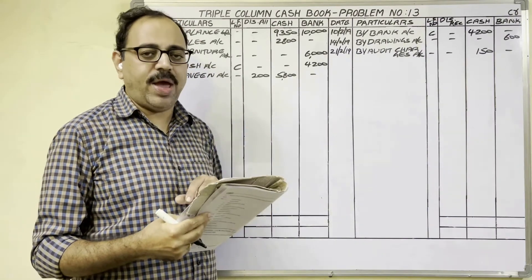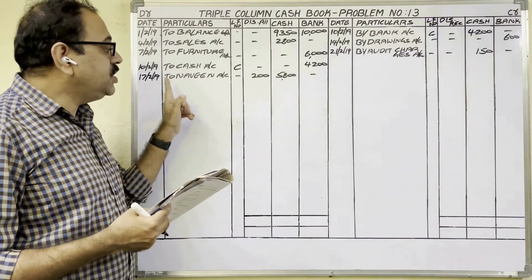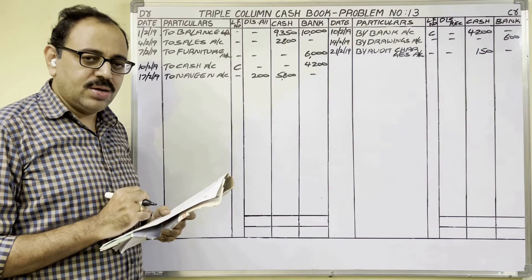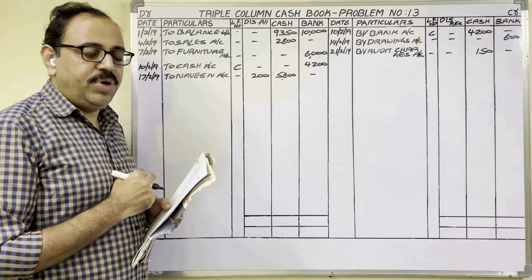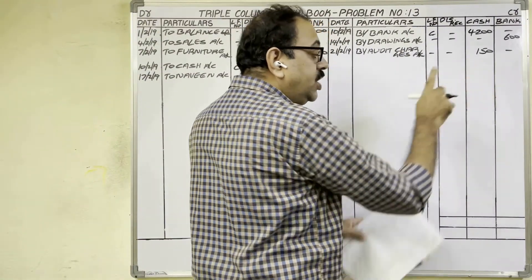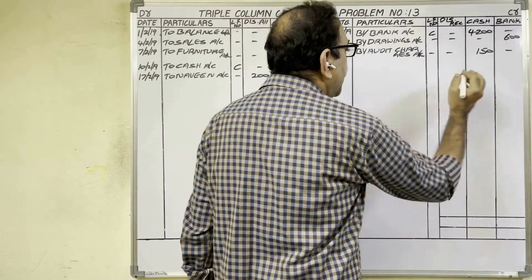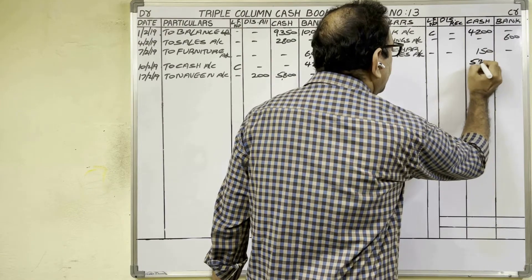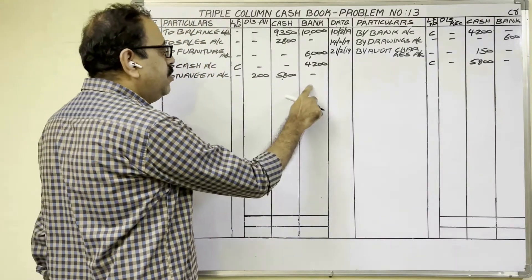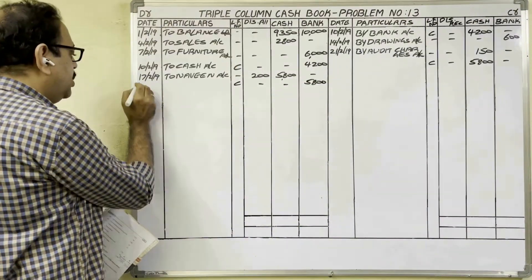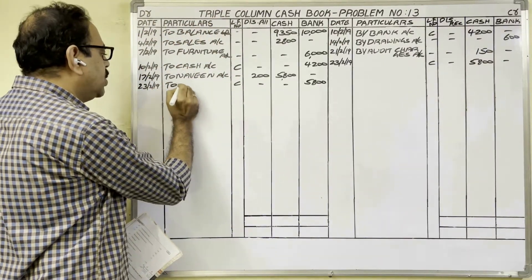23rd date: Navin's check deposited into bank. Our assumption is the same — cash is deposited into bank — so this becomes a contra entry and we write it two times. Cash is going, so credit side cash column. The amount is 5,800 (same as Navin's check amount). Bank balance is increasing, so debit side bank column. Write 'To Cash Account' in bank column particulars, and 'By Bank Account' in cash column particulars.